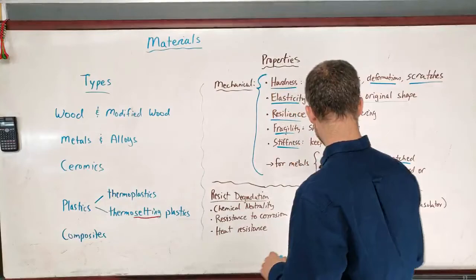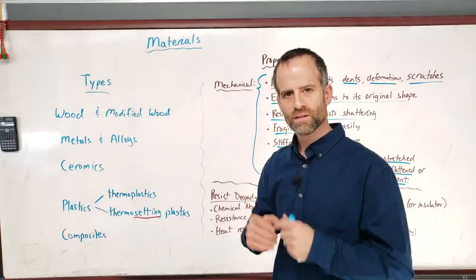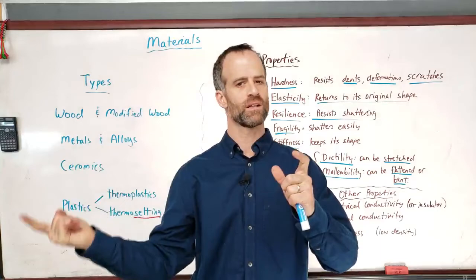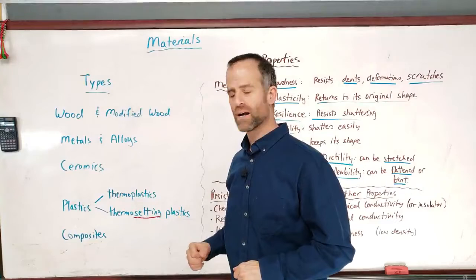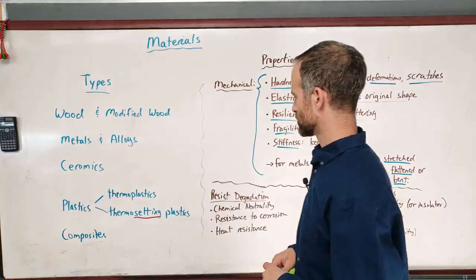Some interesting properties that maybe you're not so familiar with. Ceramics are amazing electrical insulators. Electricity does not go through ceramics well. They resist degradation a lot. They withstand heat. They're extremely heat resistant. The rest. Oh, and you have to know the difference between thermoplastic and thermosetting plastics.